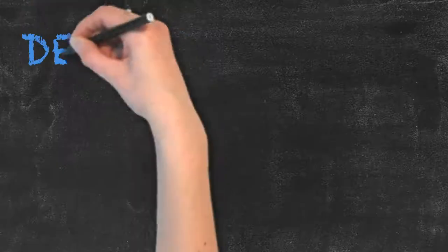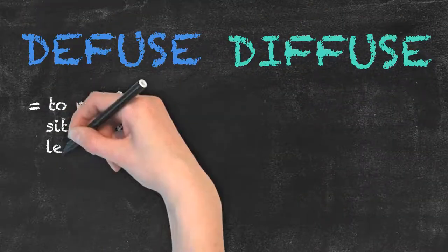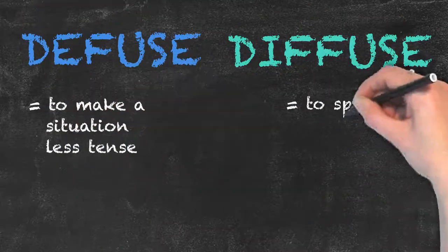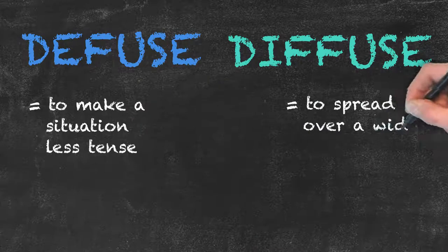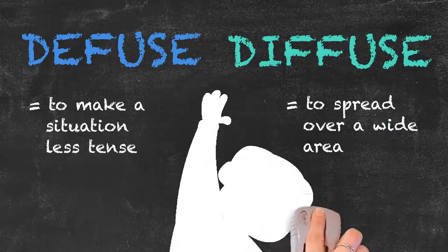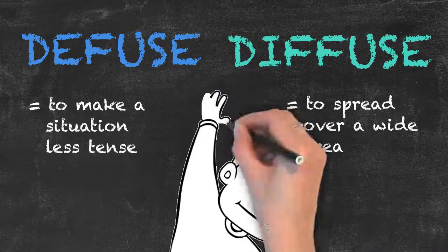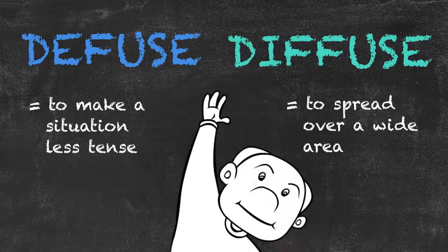So remember, diffuse means to make a situation less tense, and diffuse means to spread over a wide area. That's it for today. See you next time.